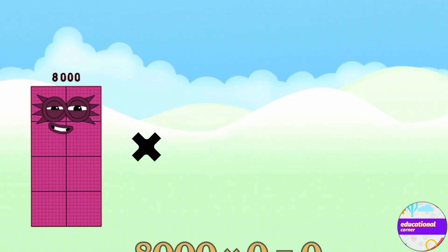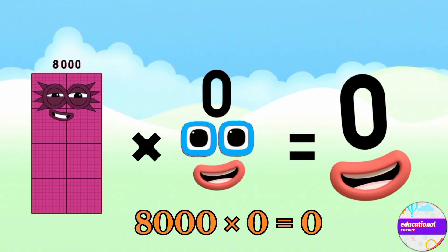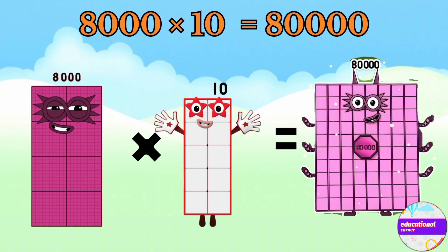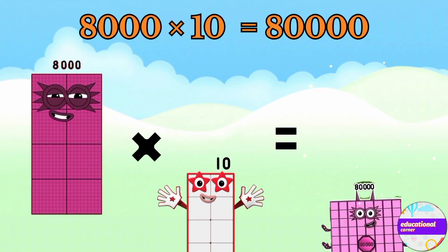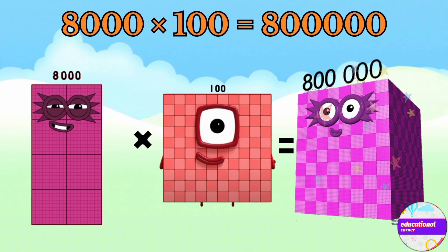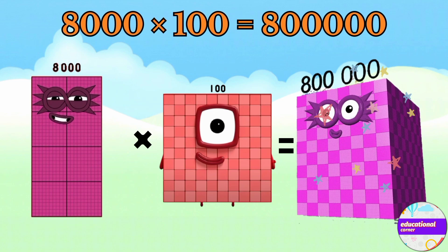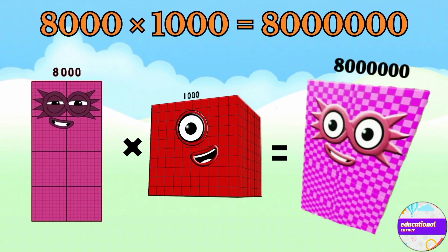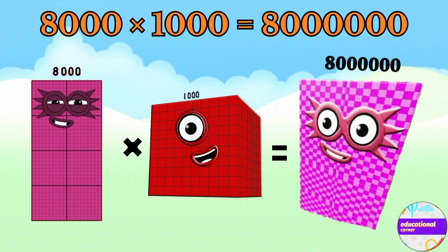8,000 multiplied by 0 equals 0. 8,000 multiplied by 10 equals 80,000. 8,000 multiplied by 100 equals 800,000. 8,000 multiplied by 1,000 equals 8,000,000.